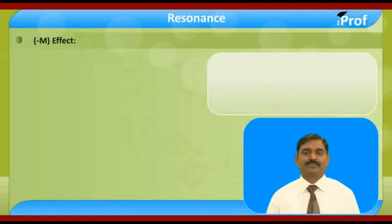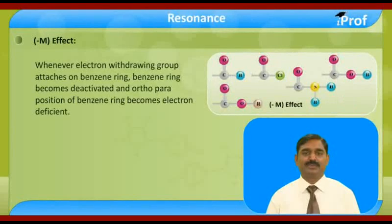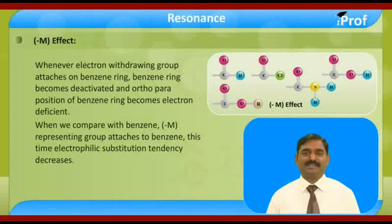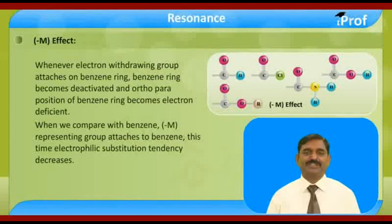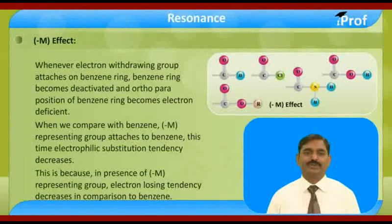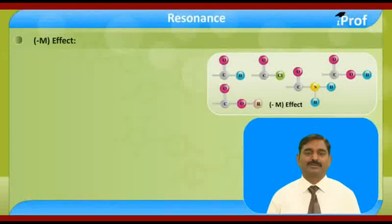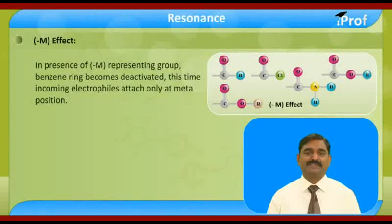Minus M effect: whenever an electron withdrawing group attaches on the benzene ring, the benzene ring becomes deactivated and the ortho and para positions of the benzene ring become electron deficient compared to benzene. When a minus M representing group attaches on benzene, the electrophilic substitution tendency decreases, because the electron density decreases in comparison to benzene. In the presence of a minus M representing group, benzene ring becomes deactivated and the incoming electrophile attaches on the meta position.